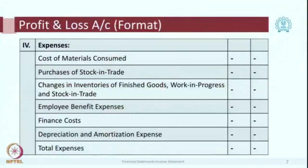The next item is employee benefit expenses. In simple terms this is the salary expense, but it may also include overtime, bonuses, perquisites, the cost of any other facilities given to employees, and the cost of recruitment. All these items are clubbed together under the heading employee benefit expense.